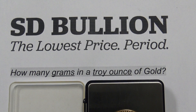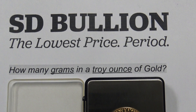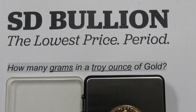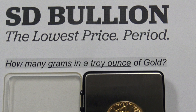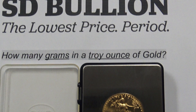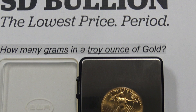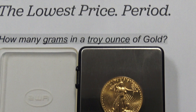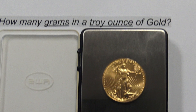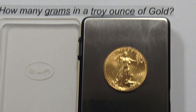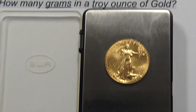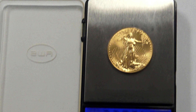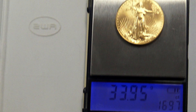To ensure this 22-karat gold eagle coin indeed has its gold gram weight, we would simply multiply 33.95 grams by .916667 purity, resulting in an approximate 31.12 grams of gold contained — two hundredths more grams of gold than is guaranteed by the coin's stamping and hallmark.